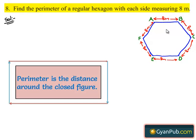First we should know what is meant by perimeter. Perimeter is the distance covered along the boundary forming a closed figure when you go around the figure once.